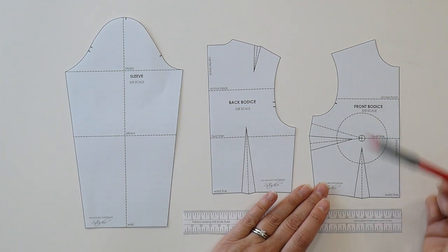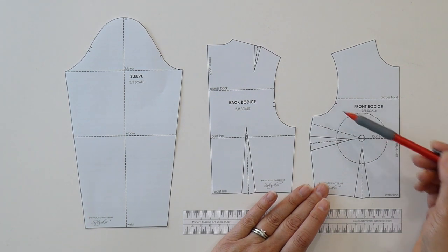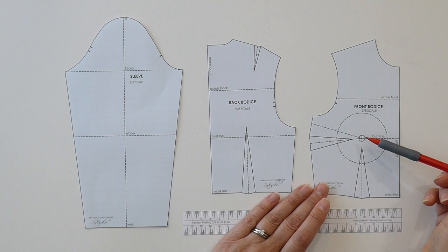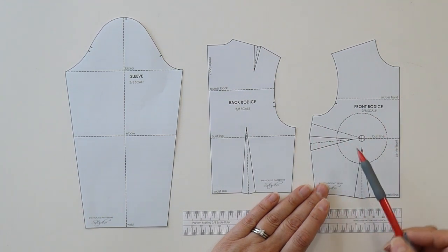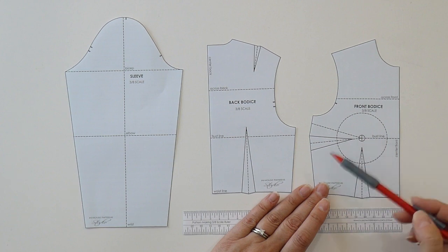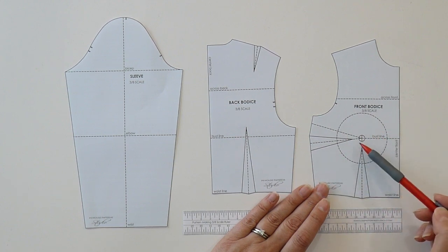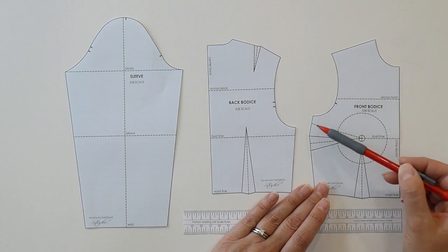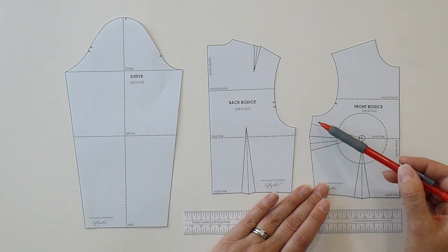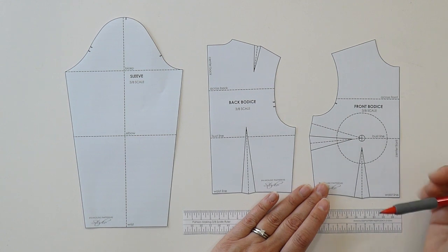Now sometimes this is going to indicate that you need a full bust adjustment, but sometimes if your bust line is fitting quite well and you don't have any other drag lines around the bust or directing to the bust, sometimes it's just that the front armhole is a little bit too long for what you particularly need.